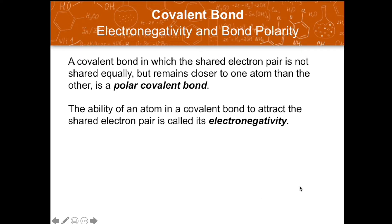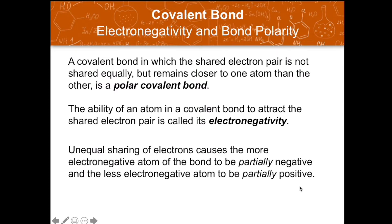What about compounds composed of two different elements — do they share electrons equally between both nuclei? When a covalent bond has a shared electron pair that is not shared equally but remains closer to one atom than the other, there is what we call a polar covalent bond. We can determine this based on the electronegativity of the atoms in the bond.